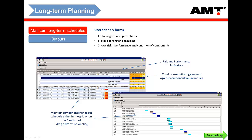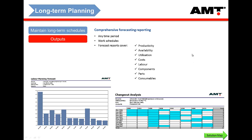By maintaining this component change-out schedule, you are updating the life cycle costing in AMT and all associated reports. These include productivity forecasts, availability forecasts, utilization forecasting, costs, labour requirements, component forecasts, specific part number forecasts, and consumable requirements. All of that is dynamically updated as you move items on the Gantt chart — it automatically updates all other associated forecasts and forecast reports.